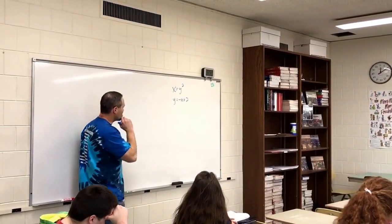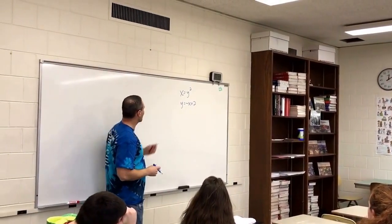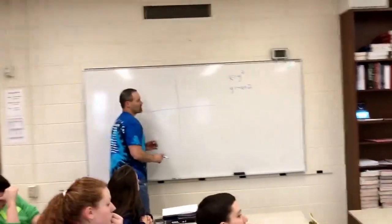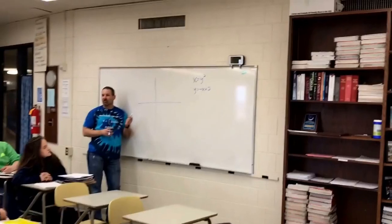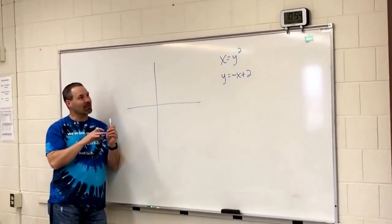All right, so we're going to find the area between these two shapes. Another parabola, another line. X equals y squared. What's that again? This. Sideways parabola, right?